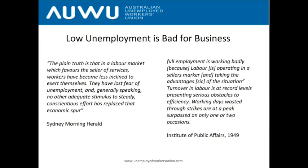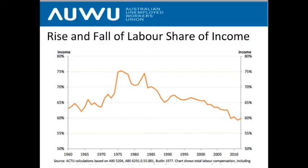The Institute of Public Affairs stated in 1949: 'Full employment is working badly because labour is operating in a seller's market and taking advantage of that situation.' So you can see the struggle clearly: on one side workers wanting full employment for a strong bargaining position over their bosses; on the other side, business wanting high unemployment to maintain a strong bargaining position over workers. During the full employment period — 30 years — workers were winning this struggle.